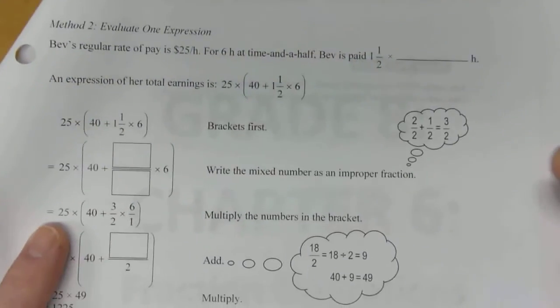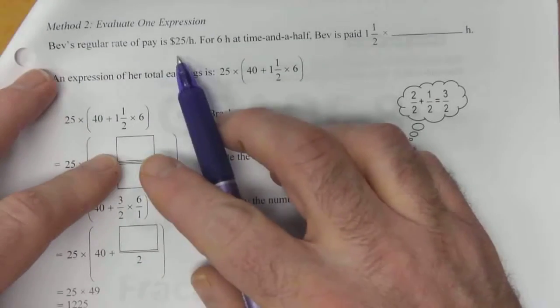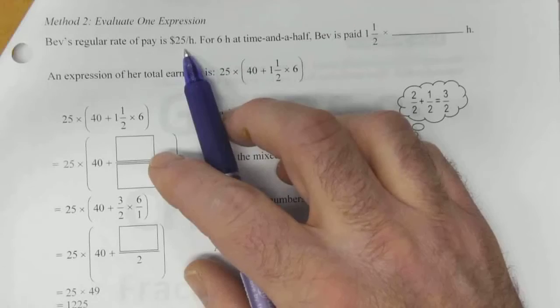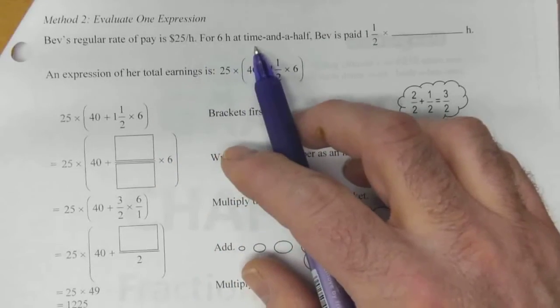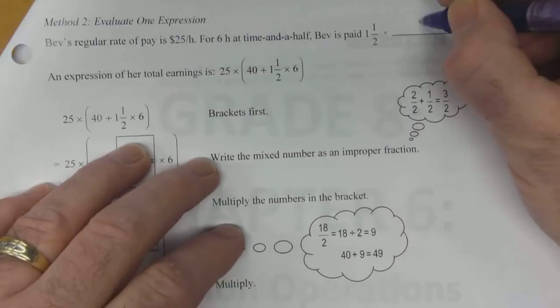Let's look at another method of doing this. Method two, evaluate using one expression. Bev's regular rate of pay was $25 an hour, and for six hours at time and a half, Bev is paid one and a half times six hours.